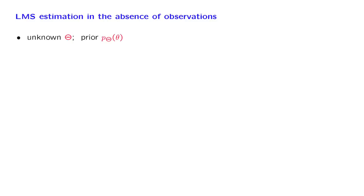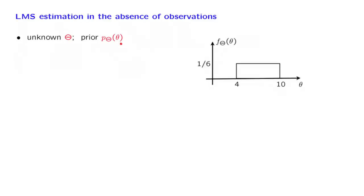In this segment, we introduce the subject of least mean squares estimation. But as a warm up, we will start with a very simple special case. Suppose that we have some random variable that we wish to estimate, and that we have the probability distribution of this random variable — a probability mass function if it's discrete, or a probability density function if it's continuous.